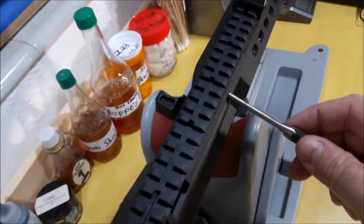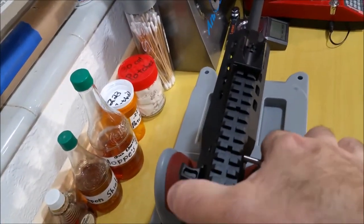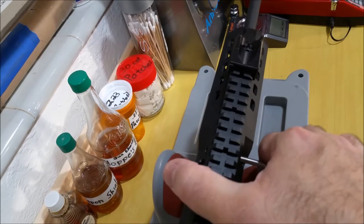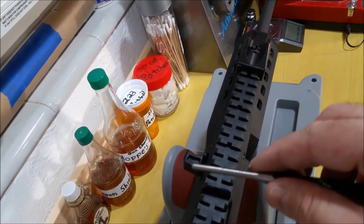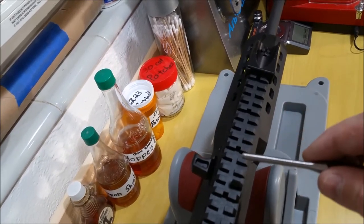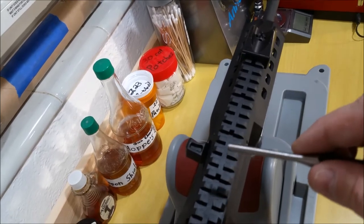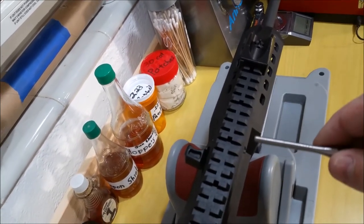So just put your punch into the hole. Bring your charging handle forward as far as it will go, it will stop and then as you are lightly pressing in with the punch, take your other hand and lightly try to move the charging handle out. You shouldn't have to press very hard. Once you feel the charging handle go forward, then you can remove the punch.